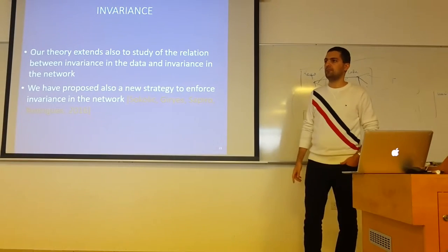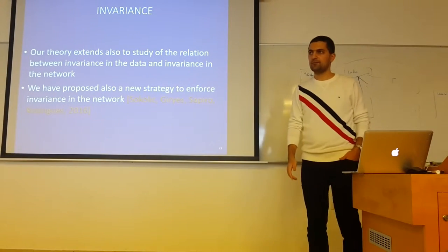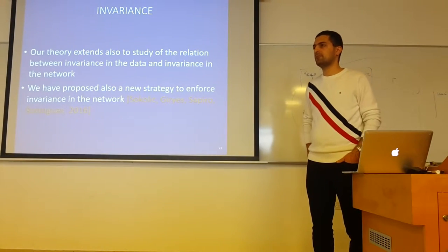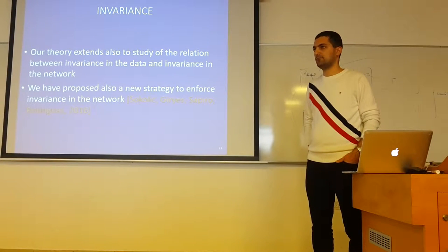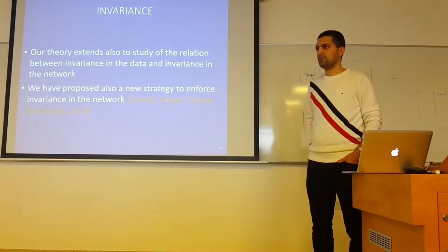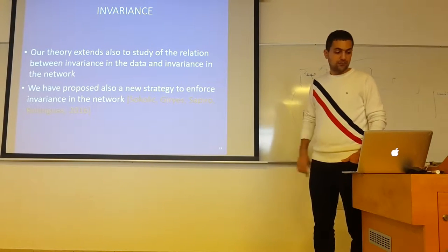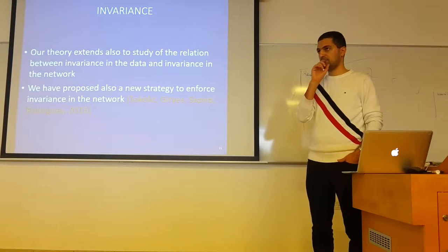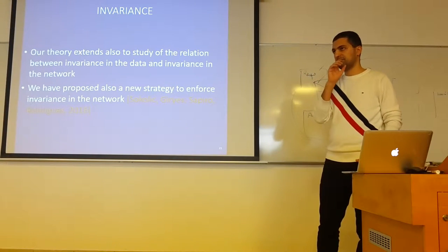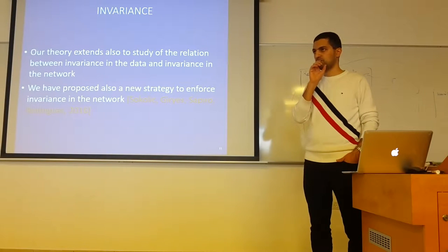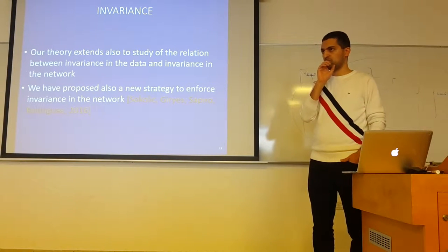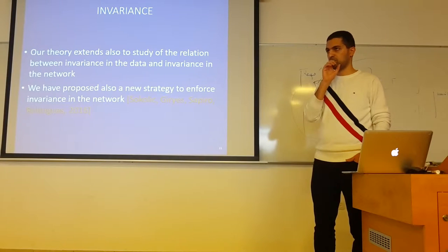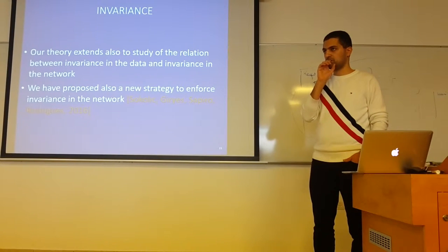I have a question. How do you know that when you use, for example, the Jacobian, you do not harm the training error? You did improve the generalization error, but what about the training error? I can say this about dropout as well. Dropout removes some of the weights, so of course you get a lower generalization bound. But I don't know about the training error.